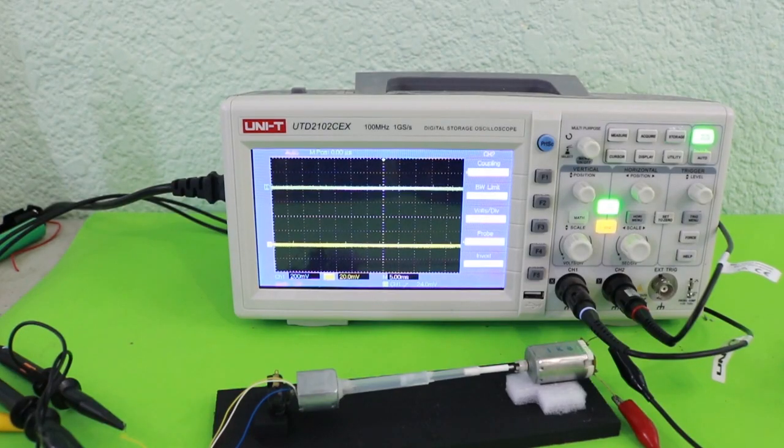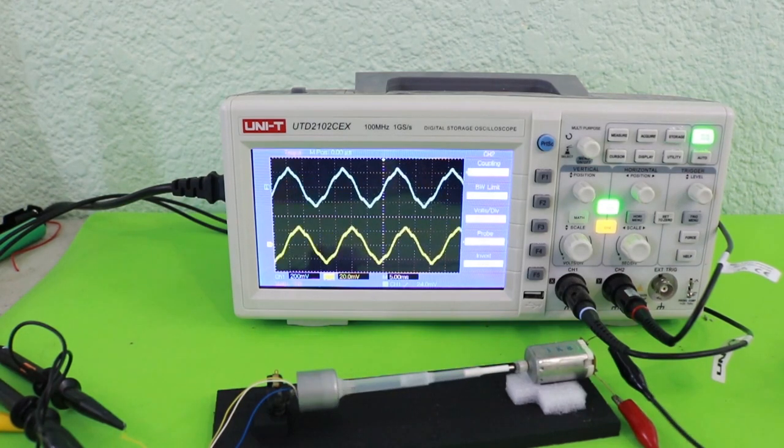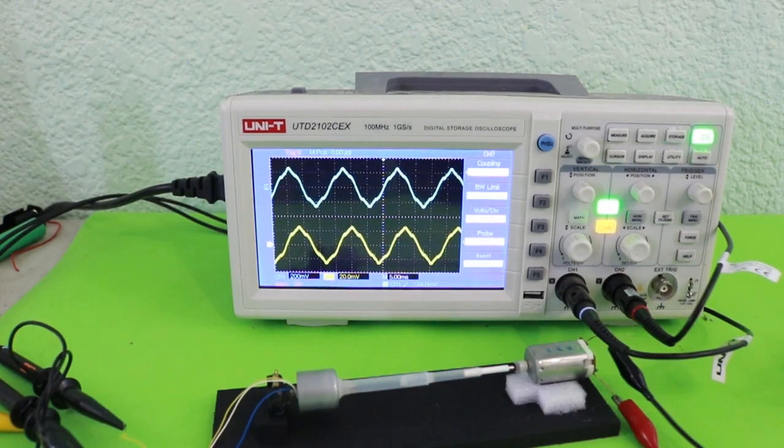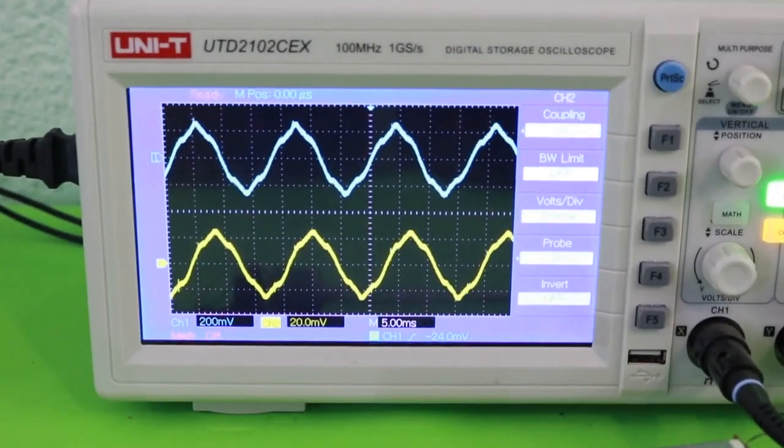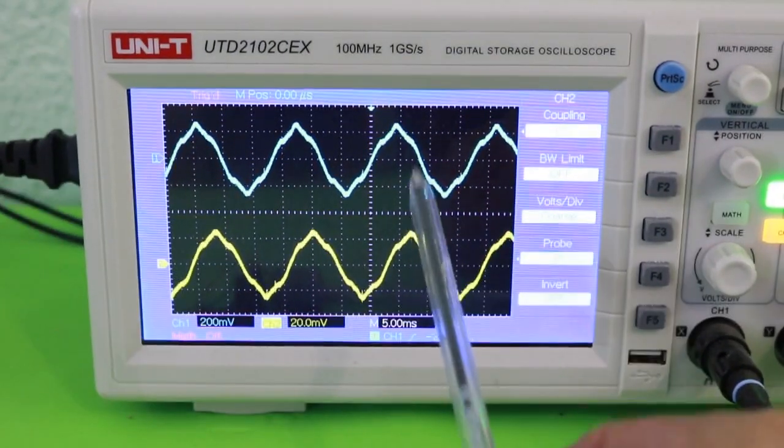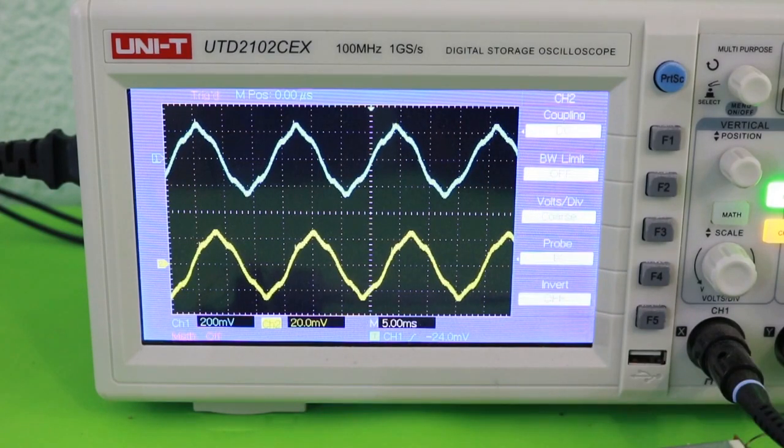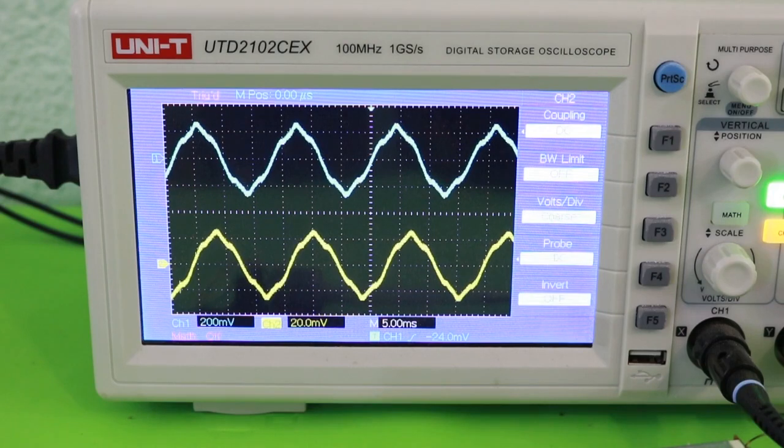Let's now see the output of the alternator in the oscilloscope. We have two channels so we can see two of the phases of the alternator. You can see that there is a delay from one wave to another and that's because the coils are separated 120 degrees from each other. If we change the speed of the motor, the frequency will also change.